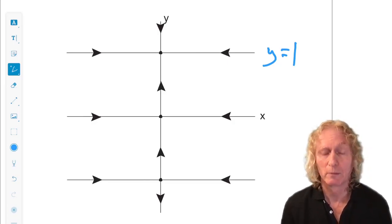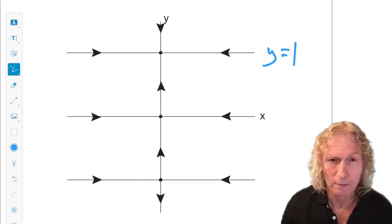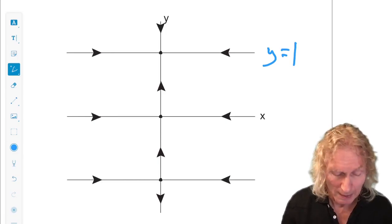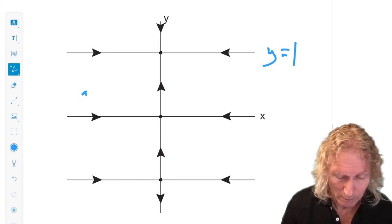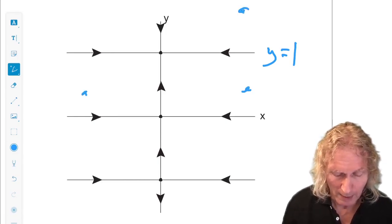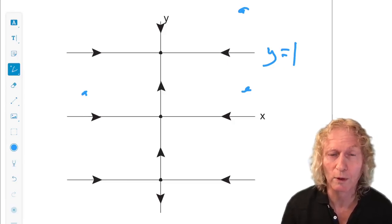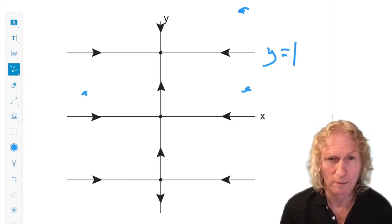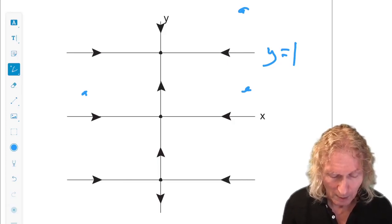So, what's the basin of attraction? It's the upper half plane, because if we start any initial condition, the x component will decrease, and the y component will move towards the line.